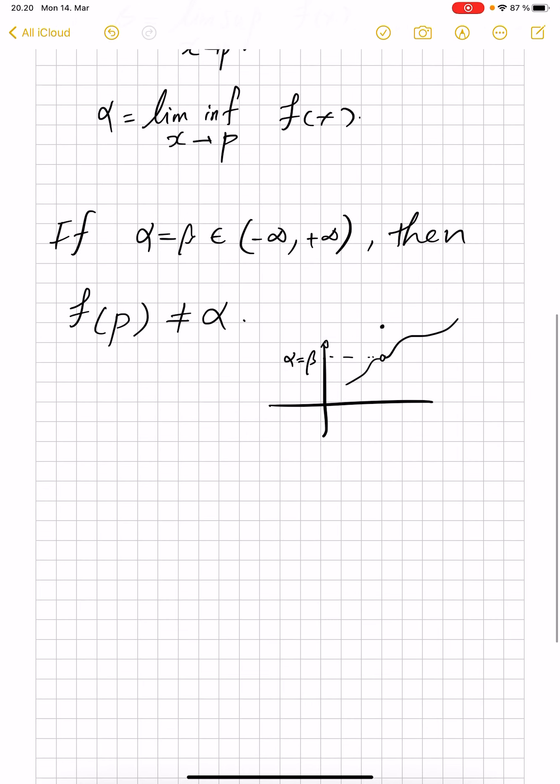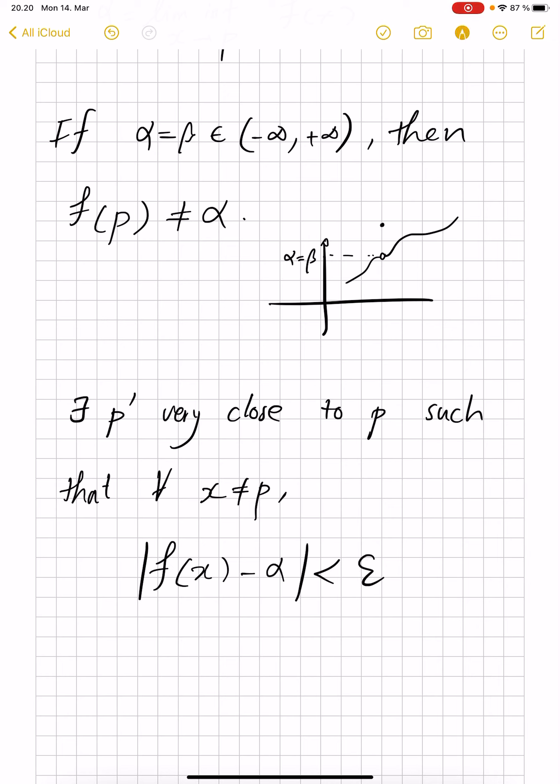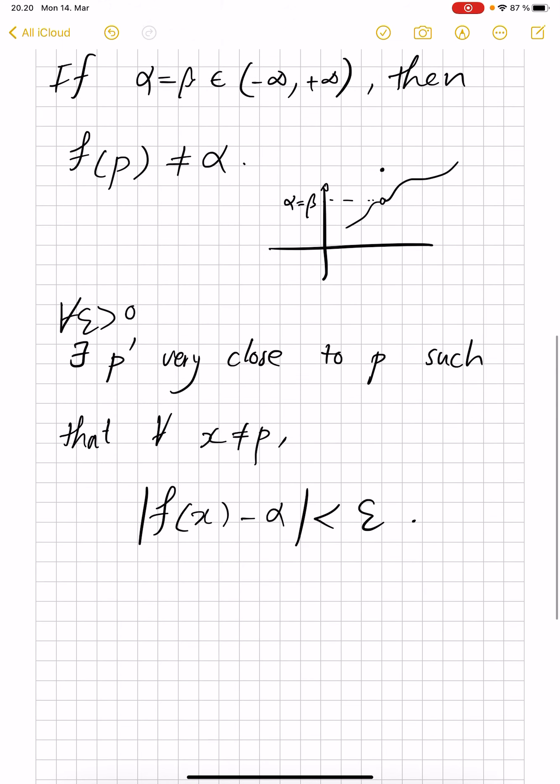Now, why is this a contradiction? Because there exists some p prime very close to p, such that for every x other than just p itself, f value at x minus α is very small. We can take that any ε. So for every ε positive, that's by definition of limit.